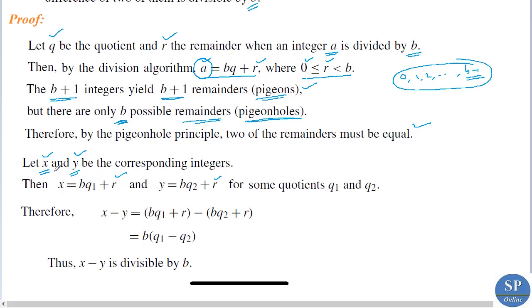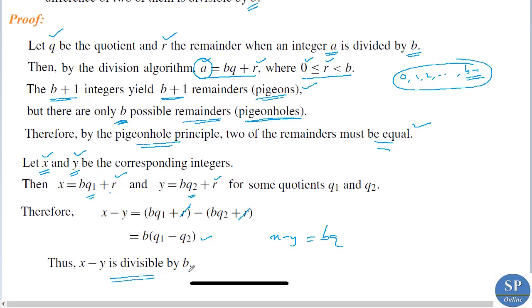Let x and y be the corresponding integers whose remainders are equal. Then we can write x minus y equals (bq1 plus r) minus (bq2 plus r), and the r terms cancel, giving x minus y equals b times (q1 minus q2), that is b times q where q equals q1 minus q2. So x minus y is divisible by b.